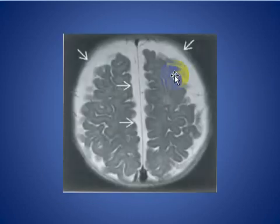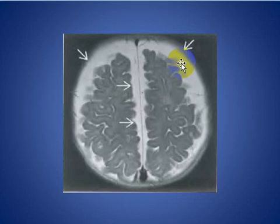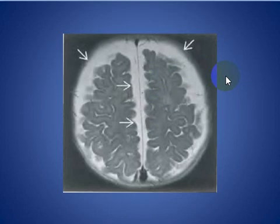In another patient with benign extracranial collection of infancy, T2-weighted MRI images show prominence of extra-axial fluid collection in the bifrontal region and around the falx. The patient has no neurological deficit.